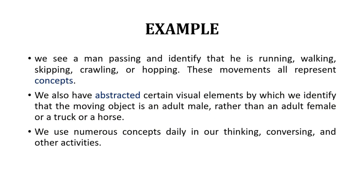For example, we see a man passing and identify that he is running, walking, skipping, crawling or hopping — these movements all represent concepts. We generally abstract from the concepts, and from certain visual events we identify that a moving object is an adult male rather than an adult female, or a truck or a horse. So abstraction comes from concepts. We use numerous concepts on a daily basis in our thinking, conversing and other activities.